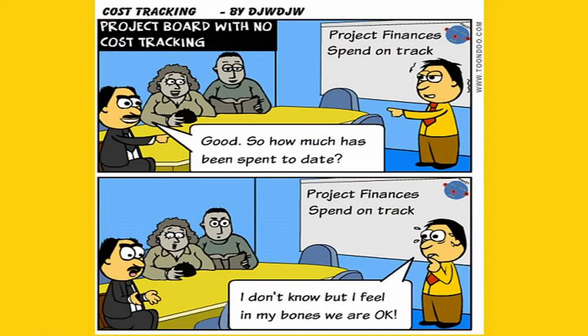Moving on to executing the project, you need to keep track of the money spent alongside the planned progress to avoid an uncomfortable project board meeting. The cost spreadsheet is your main day-to-day tool for tracking costs, but never forget that the ultimate source of truth about project spend is the organisation's finance system. So you need to periodically track costs here as well, say monthly, remembering that there may be a lag in this being updated.